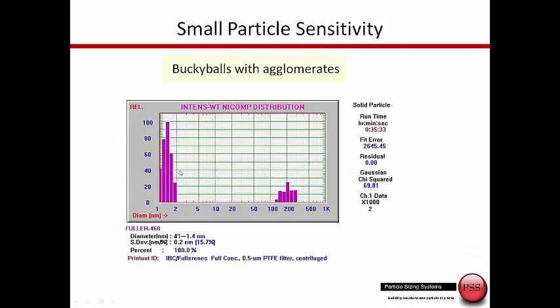This shows data from Buckminster fullerenes or buckyballs where the first peak is at 1.4 nanometers where they are expected. So we show the peak of the very small buckyballs and up here are some agglomerates at 200 nanometers. This is showing the ability to both detect very small particles and also resolve the second peak of the agglomerated sample.